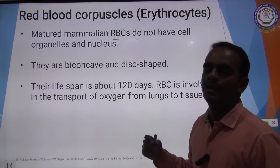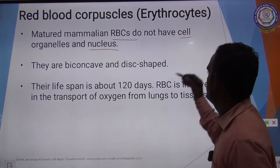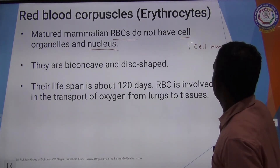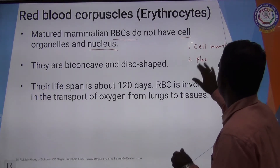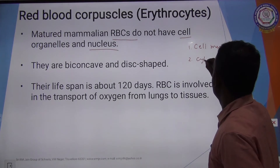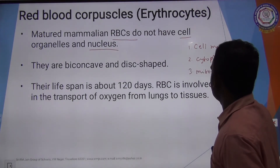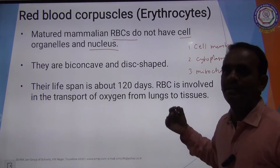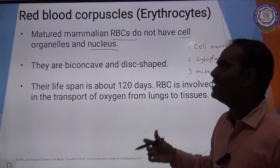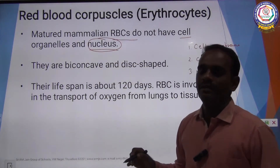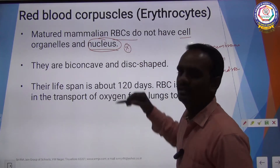A mature mammalian RBC does not have cell organelles and nucleus. Cell organelles include cell membrane, cytoplasm, mitochondria, etc. A mature mammalian RBC has no nucleus at all — this is a frequently asked question in competitive exams.